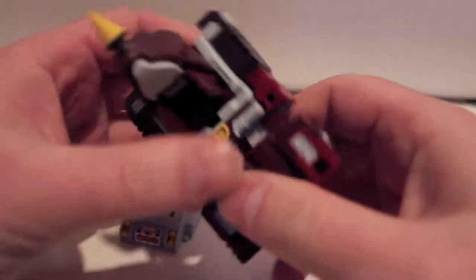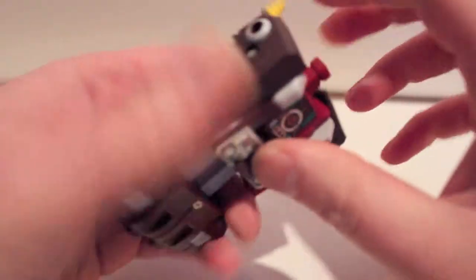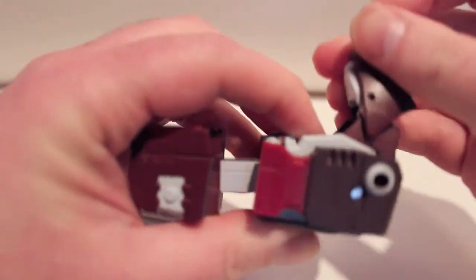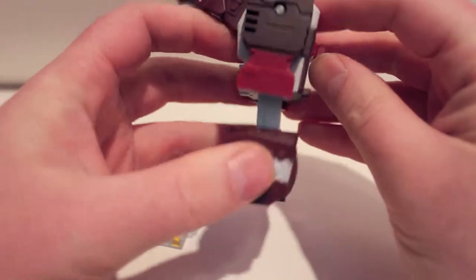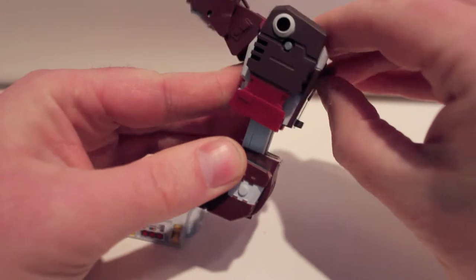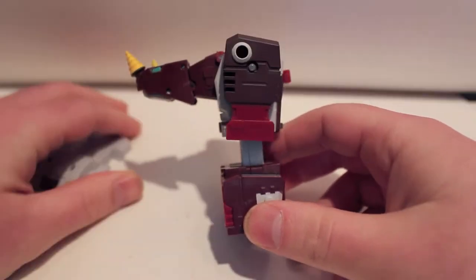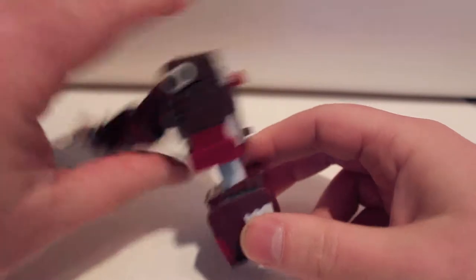And then as an arm, which is literally extend this out, plug in the fist from Tusker, extend this out like that, and that would be his arm mode. If you want to use him as an arm.